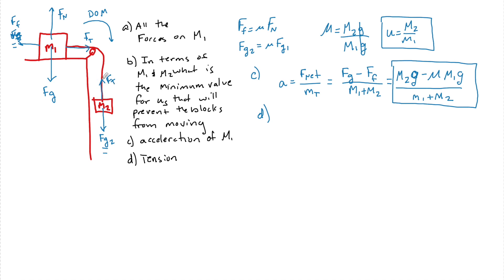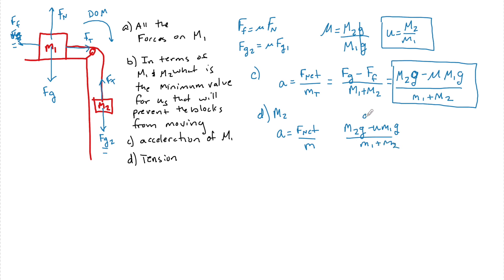To find the tension on the string — this equation won't have numbers, it's very math intensive — after we know A, we take one of the two systems and apply Newton's second law again on that smaller system. I'm going to choose M2 as my smaller system and say A = F_net / M. The A I just solved for was (M2G − μM1G) / (M1 + M2). The F_net on M2 is FG2 — positive, in the direction of motion — minus the force of tension, opposite to the direction of motion, divided by M2.